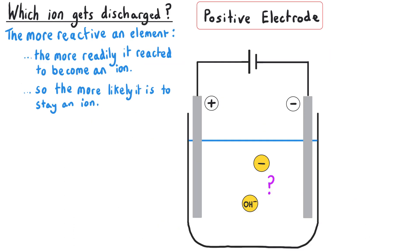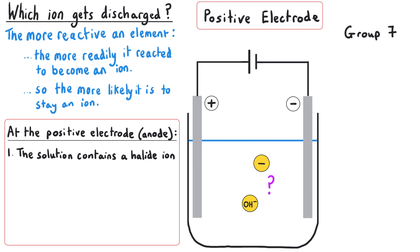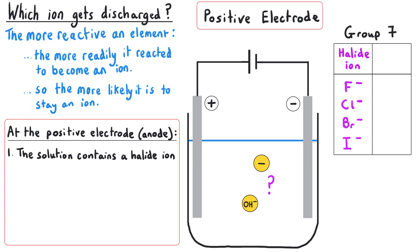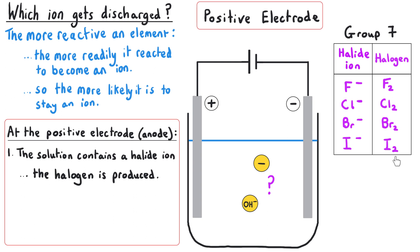Working out which ion gets discharged at the positive electrode during electrolysis of aqueous solutions is probably the easier of the two. We look for the presence of a halide ion — ions formed when group seven elements gain an electron to fill their outer shell. The most practical approach is to look to see if the solution contains a halide ion: fluoride, chloride, bromide, or iodide. If a halide ion is present, we produce the corresponding halogen — fluorine, chlorine, bromine, or iodine — remembering that all halogens are diatomic molecules.